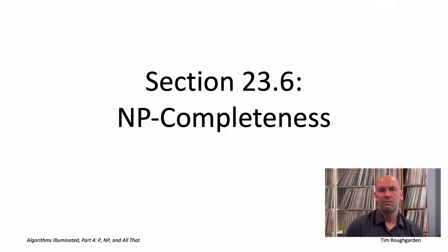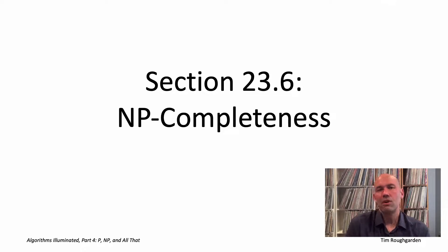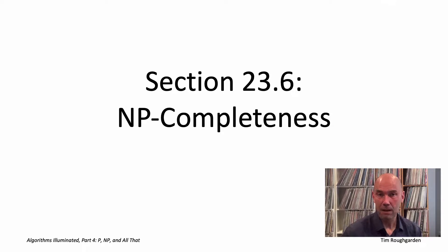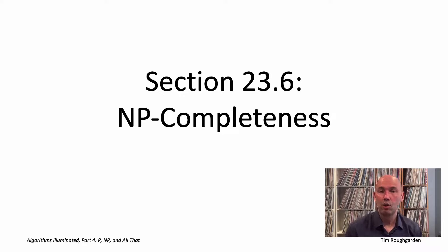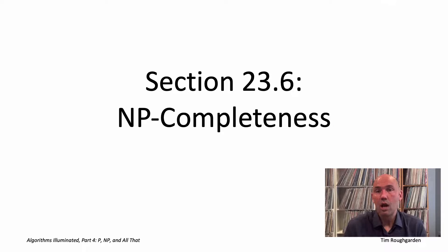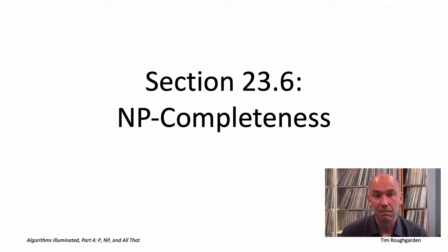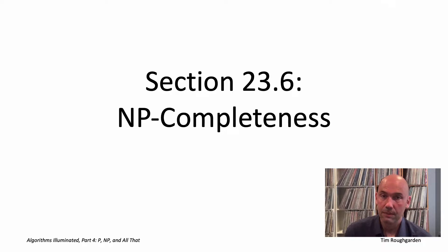NP-completeness is basically a specific form of NP-hardness. For example, the 3SAT problem is an NP-hard problem. That means if you had a polynomial time algorithm that solved the 3SAT problem, you could, using reductions, automatically build polynomial time algorithms for all of the problems in the complexity class NP — all problems with efficiently recognizable solutions.